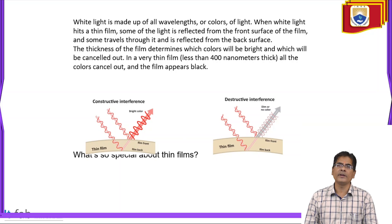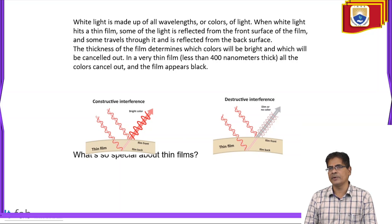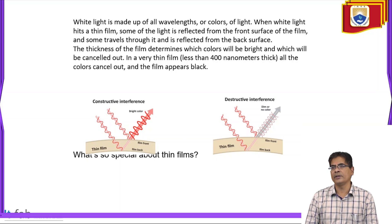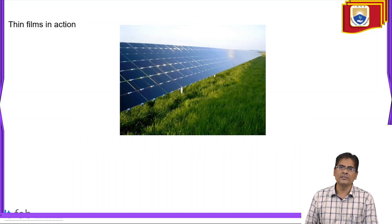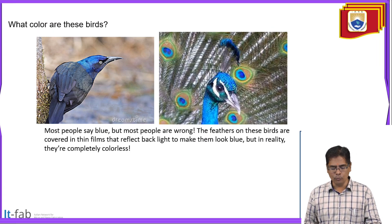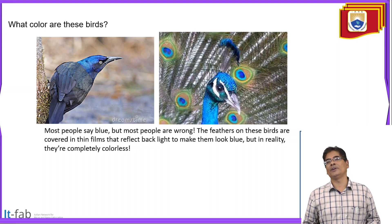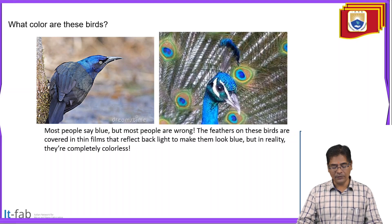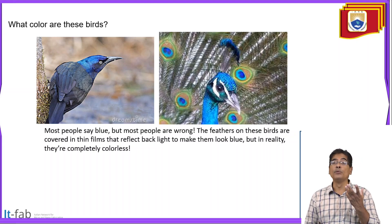In a very thin film less than 400 nanometers thick, all colors cancel out and the film appears black. The feathers on certain birds are covered in thin films that reflect light to make them look blue, but in reality they are completely colorless — the color is due to thin film interference only.